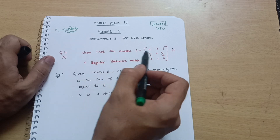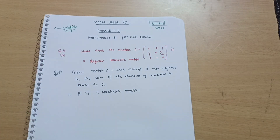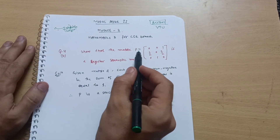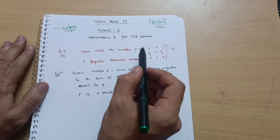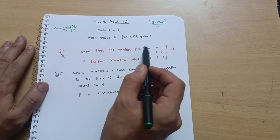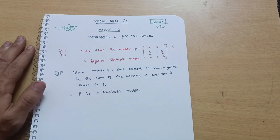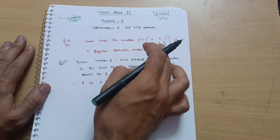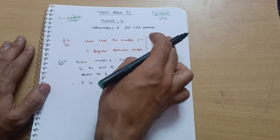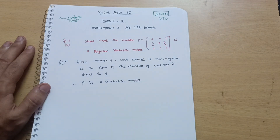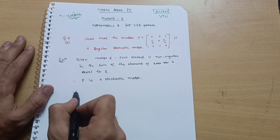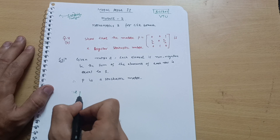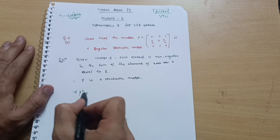To show it is a regular stochastic matrix, you must calculate higher-order powers — P², P³, P⁴, P⁵. If any of these powers has all non-negative elements with each row summing to 1, then we can call it a regular stochastic matrix. Let me first calculate P².